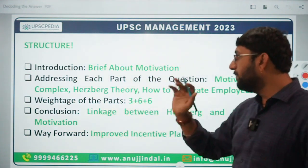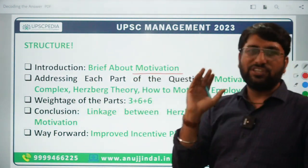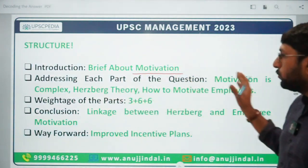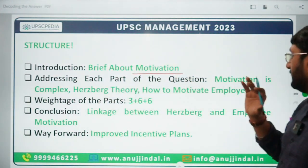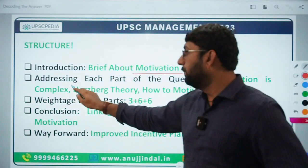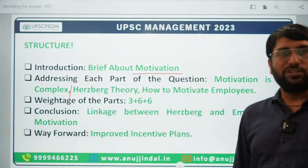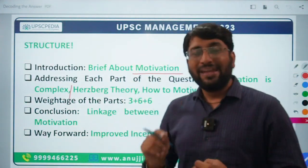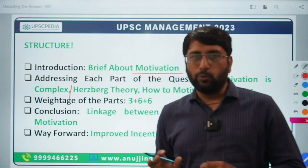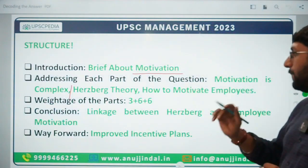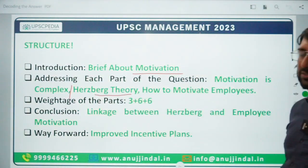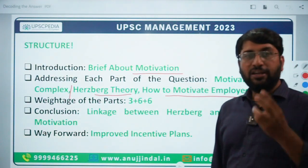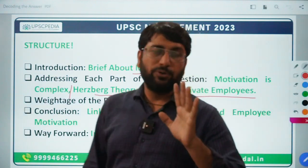Let's quickly spend 30 seconds to understand the question and try to structure it. In the introduction, what to tell? A brief about motivation — one line about what motivation is. Addressing each part of the question — first identify the parts. First part: motivation is complex — we were asked that motivation is a simple process but motivating someone is a daunting task — so I feel explaining the statement briefly is very necessary. Second part: Herzberg's theory — what is it? Third part: how to motivate employees at different levels — you need to know that.